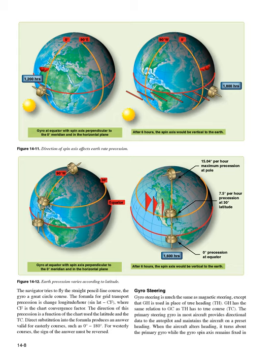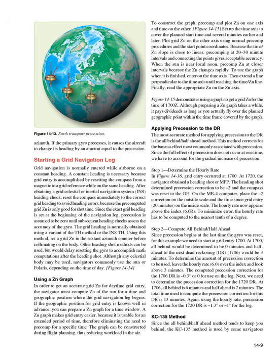Gyro steering. Gyro steering is much the same as magnetic steering, except that GH is used in place of true heading (TH). GH has the same relation to GC as TH has to true course (TC). The primary steering gyro in most aircraft provides directional data to the autopilot and maintains the aircraft on a preset heading. When the aircraft alters heading, it turns about the primary gyro while the gyro spin axis remains fixed in azimuth. If the primary gyro precesses, it causes the aircraft to change its heading by an amount equal to the precession.